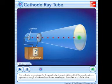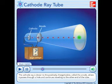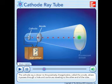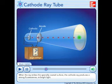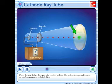The cathode ray is drawn to the positively charged plate, called the anode, where it passes through a hole and continues traveling to the other end of the tube. When the ray strikes the specially coated surface, the cathode ray produces a strong fluorescence or bright light.